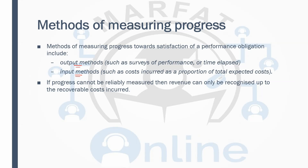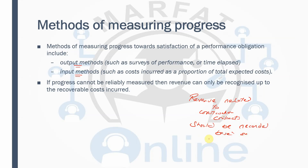The correct accounting is that revenue related to construction contracts should be recorded based on the stage of completion. To determine the stage of completion — the progress and how much work the entity has done — there are two methods: the output method, also known as the work certified method, and the input method, also known as the cost method.